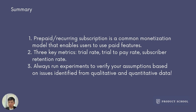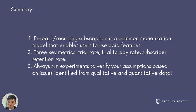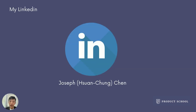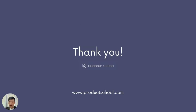Before the end of this session, here is a summary. One: prepaid and recurring sub is a common monetization model that enables users to use paid features. Two: there are three key metrics — trial rate, trial-to-pay rate, and subscriber retention rate. Three: you always have to run experiments to verify your assumptions based on issues identified from qualitative and quantitative data. Feel free to search Joseph Chen on LinkedIn and add me as a connection. That's all for today — thank you!